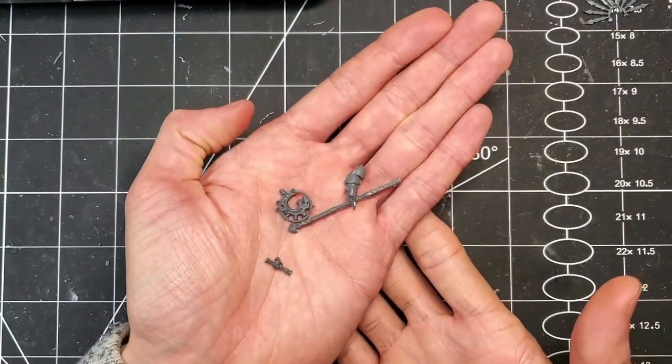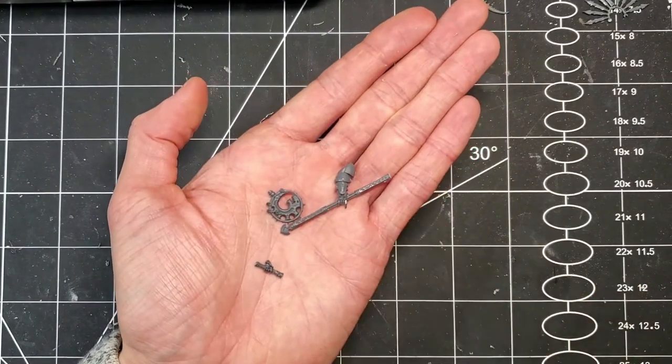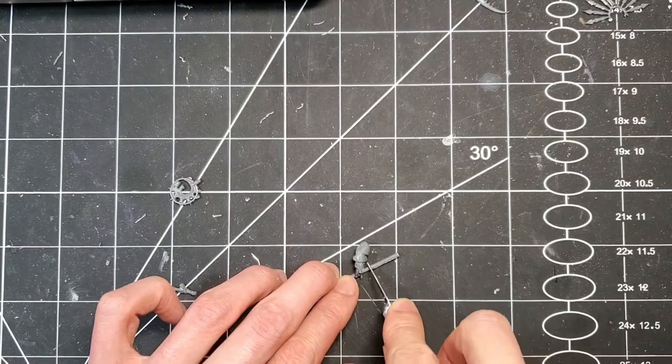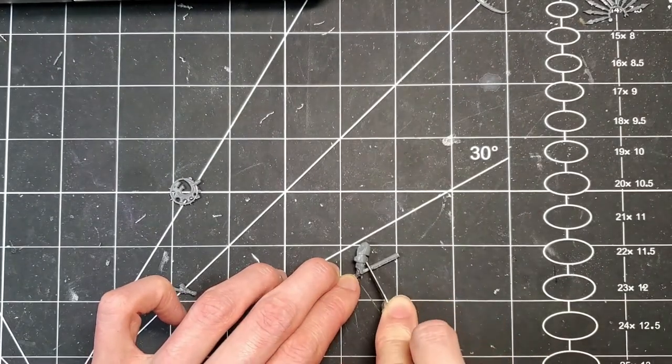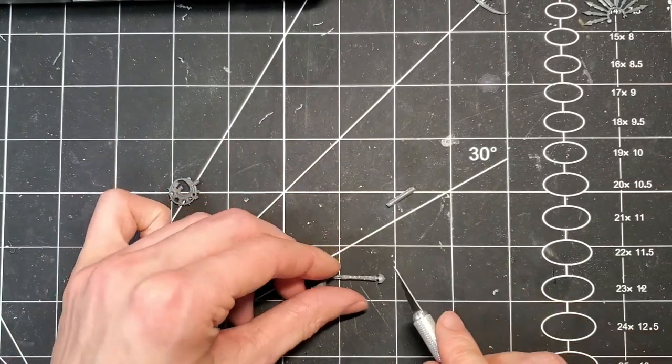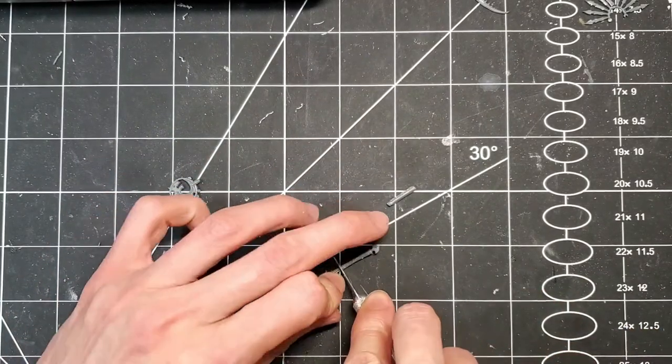Of course a high society magus needs a high society staff as well, so to create it we're going to be using a Thousand Suns sorcerer arm, or the staff thereof at least, and the kind of top banner portion of a locust elite character for the cult.